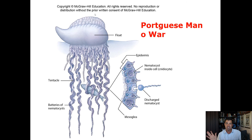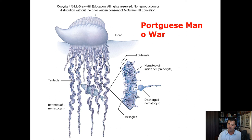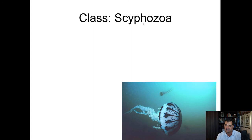One worth noting from your book is the Portuguese Man of War. It is a hydrozoan that is actually a large colonial organism. The individuals in the colony form a large structure called a float that is filled with air — like a gas bladder — which acts as a sail. There are also tentacles hanging off it that can be extremely long, and all the polyps hanging off those tentacles are capable of stinging.